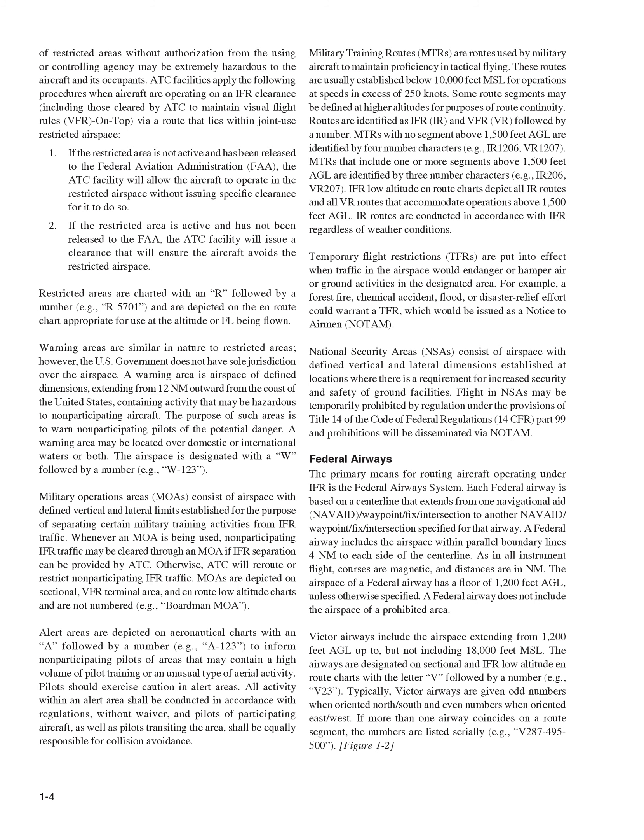Warning areas are similar in nature to restricted areas; however, the U.S. government does not have sole jurisdiction over the airspace. A warning area is airspace of defined dimensions, extending from 12 nautical miles outward from the coast of the United States, containing activity that may be hazardous to non-participating aircraft. The purpose of such areas is to warn non-participating pilots of the potential danger. A warning area may be located over domestic or international waters or both. The airspace is designated with a W followed by a number, for example W123.